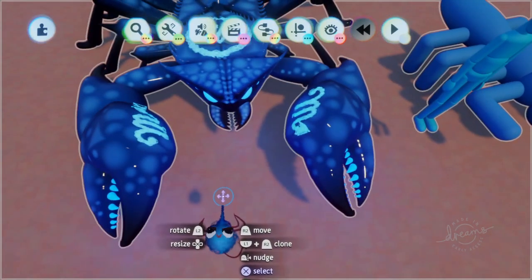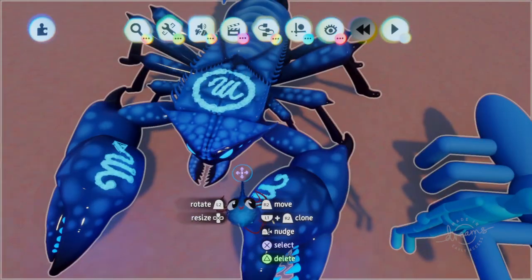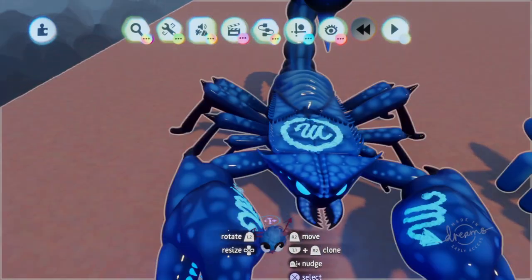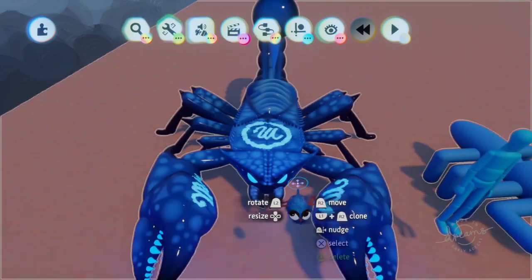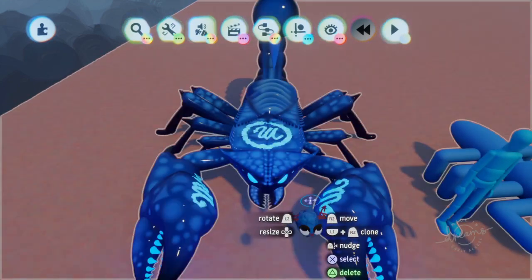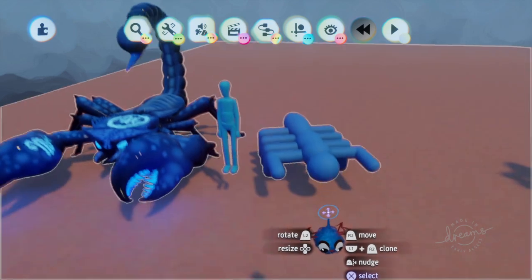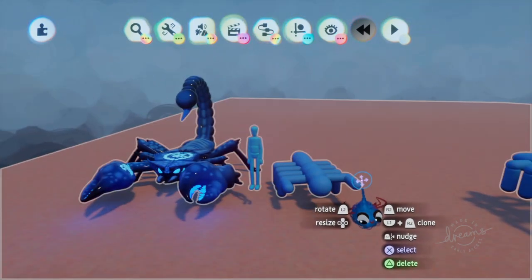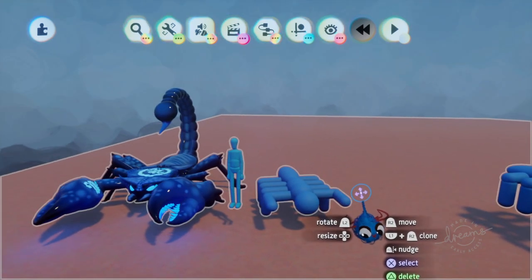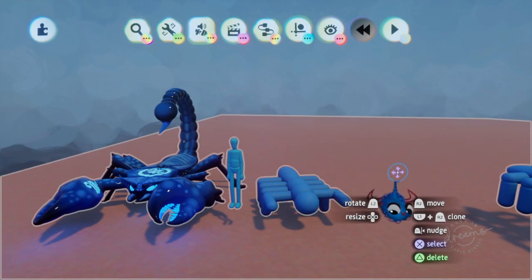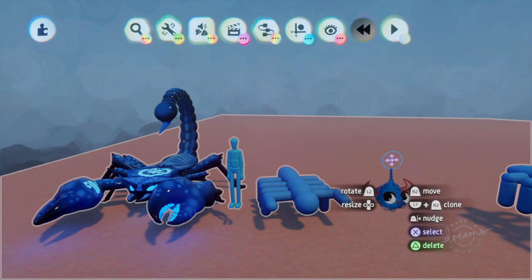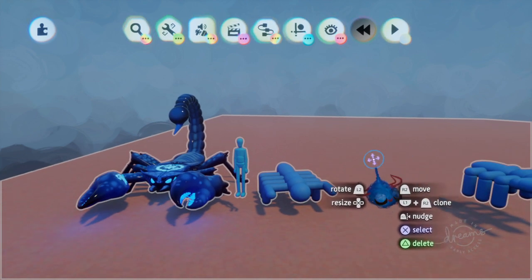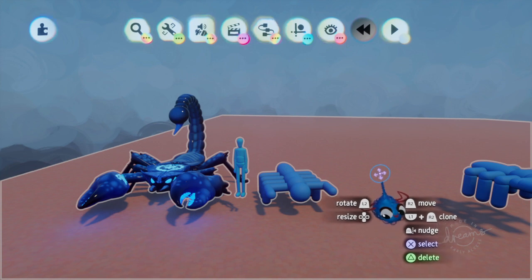And that's pretty much how I did my scorpion. I hope that helps everybody understand how to make a multi-limb character. If you have any more questions, you can reach out to me and I can help you the best I can. That's it, thank you for watching. Have a good day.